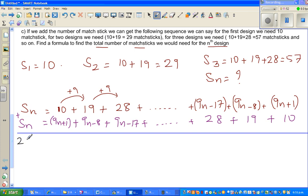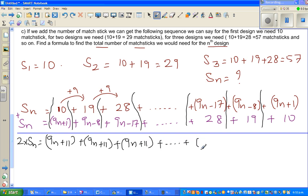If you add this, Sn plus Sn is 2 times Sn is equal to, so let me make divisions here. Now what is this? 10 plus 9n plus 1 will give you 9n plus 11. Can you see? If you add this, 9n minus 8 plus 19 is nothing but 9n plus 11. Again, here you can see the pattern 9n plus 11 plus dot dot dot plus 9n plus 11 plus, this is again 9n plus 11.